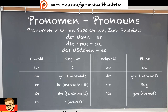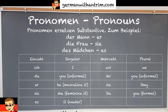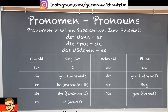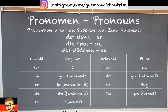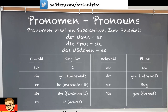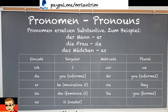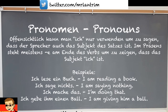'Ich' is I, 'du' is you (informal singular), 'er' means he or the masculine 'it,' 'sie' means she or the feminine 'it,' and 'es' is the neuter form of it — never used for a masculine or feminine thing. The plural pronouns are 'wir' (we), 'ihr' (you all, informal plural), 'sie' (they), and 'Sie' (formal you). If you have er und sie together, that becomes 'sie' meaning they.